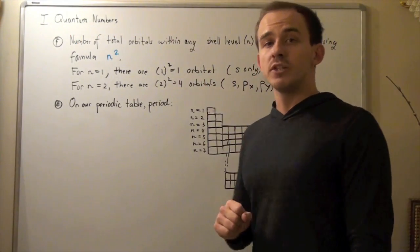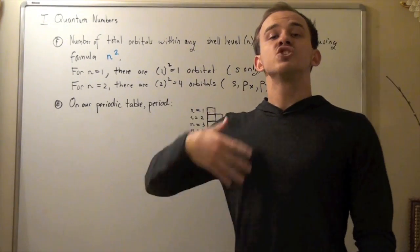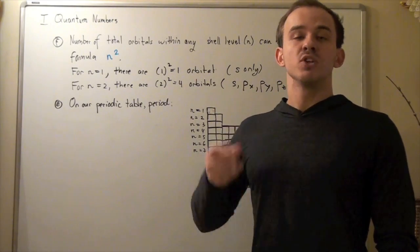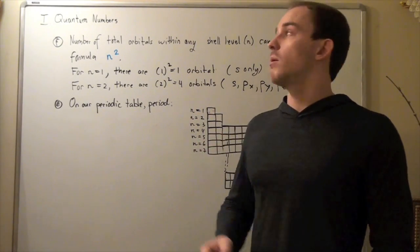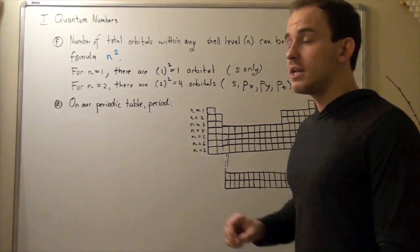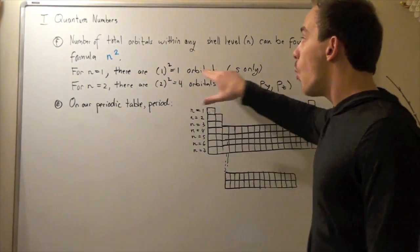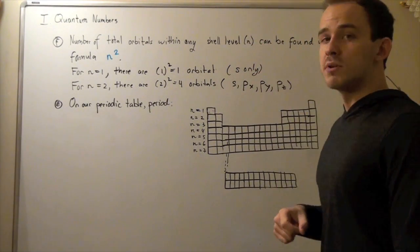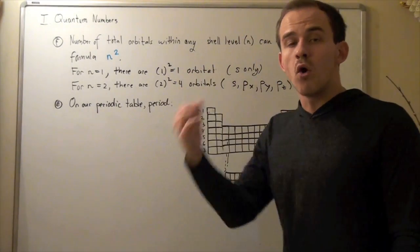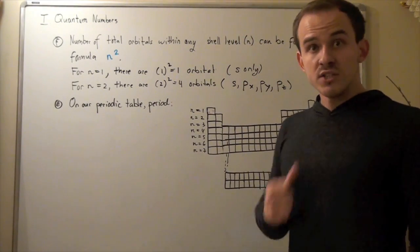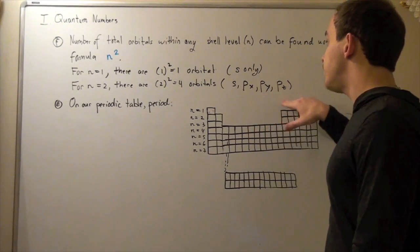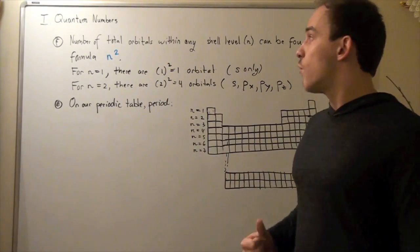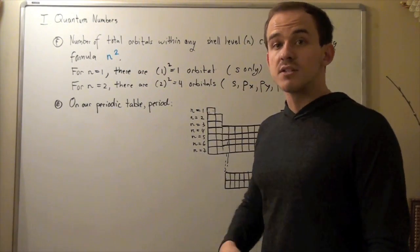To find the total number of orbitals in any given shell level, take the principal quantum number and square it. For N equals 1, there is 1 squared equals 1 orbital — just the S orbital. For N equals 2, there are 2 squared equals 4 total orbitals: S, px, py, and pz. For N equals 3, there are 9 orbitals; for N equals 4, there are 16 orbitals, and so on.